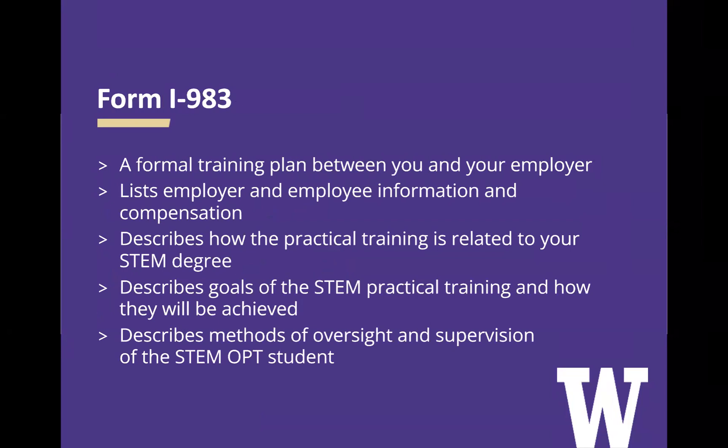Form I-983 is a formal training plan between you and your employer. This will list employer and employee information. The plan will describe how the practical training is related to your STEM degree, training goals and how they're achieved, and the methods of oversight and supervision of the STEM OPT student.